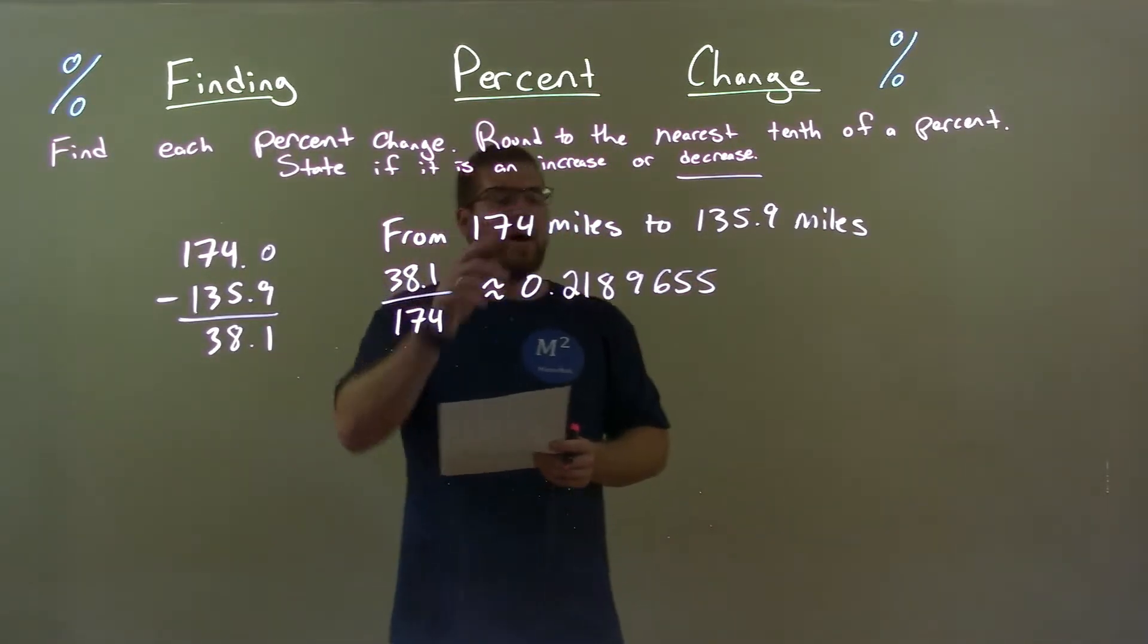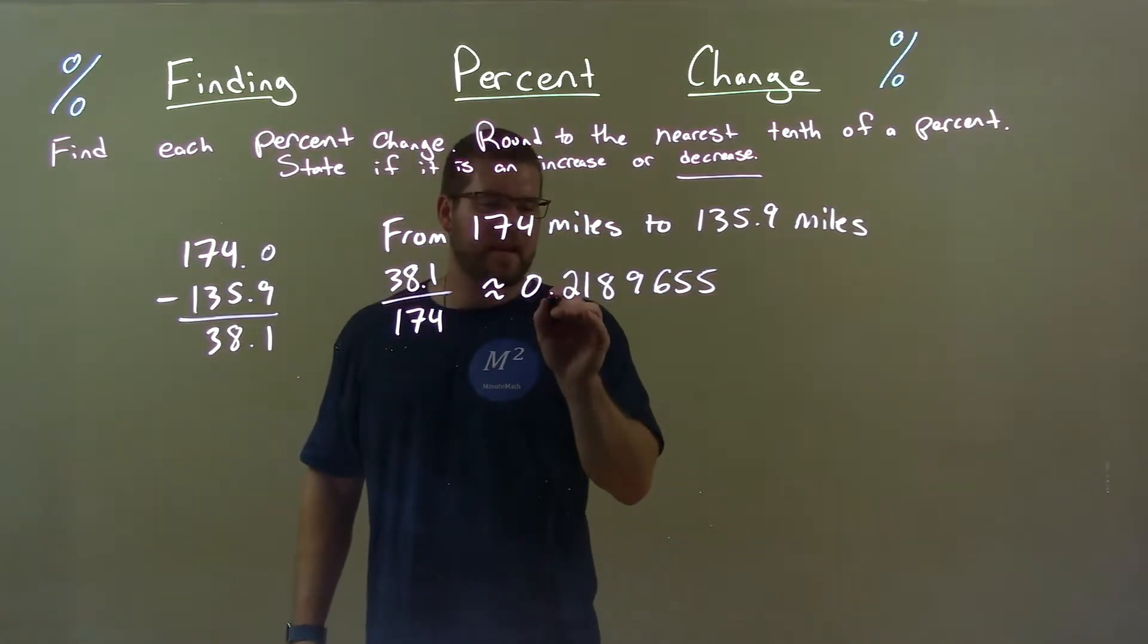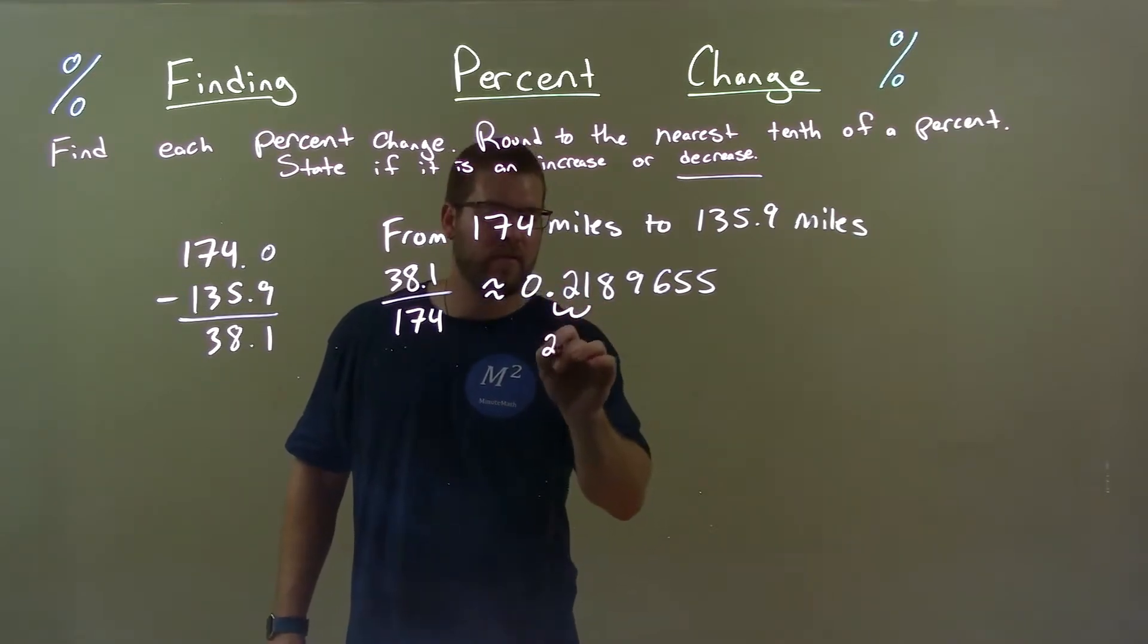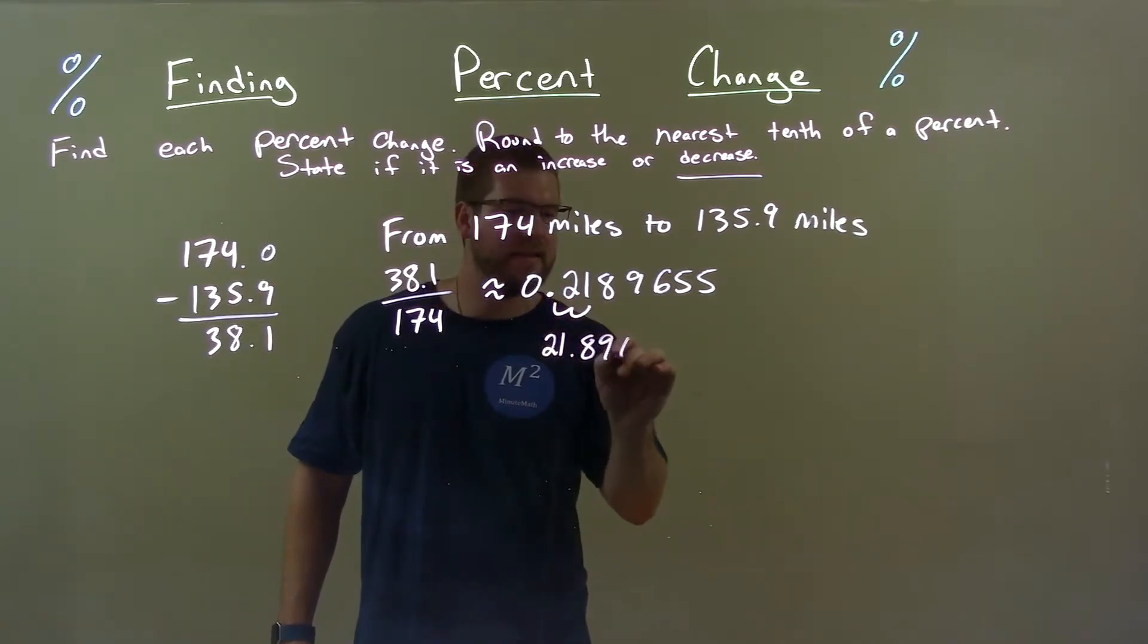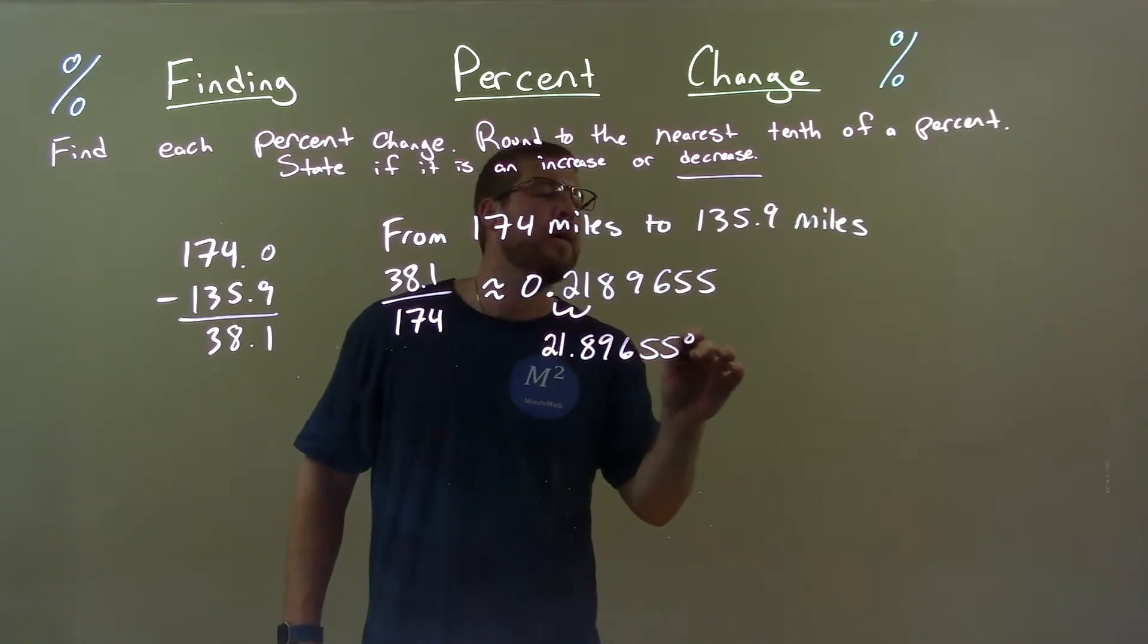Alright, write that as a percent. Take this decimal, two spots to the right gives us the percent: 21.89655%.